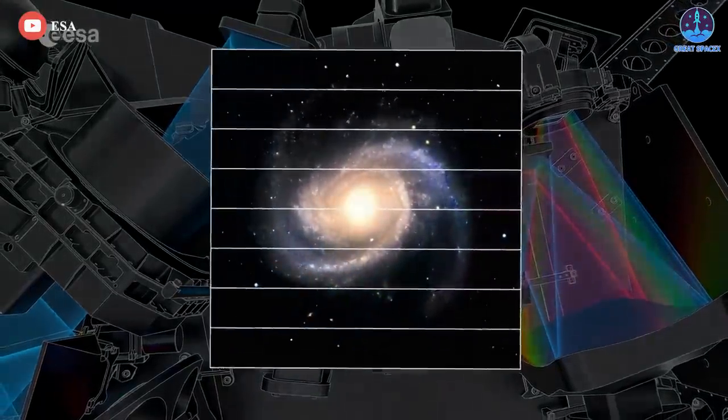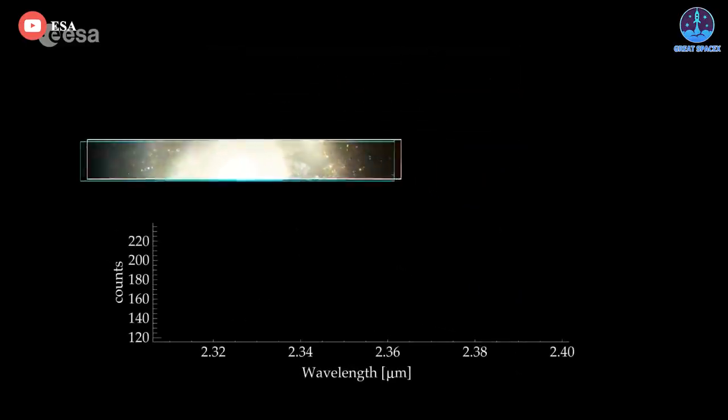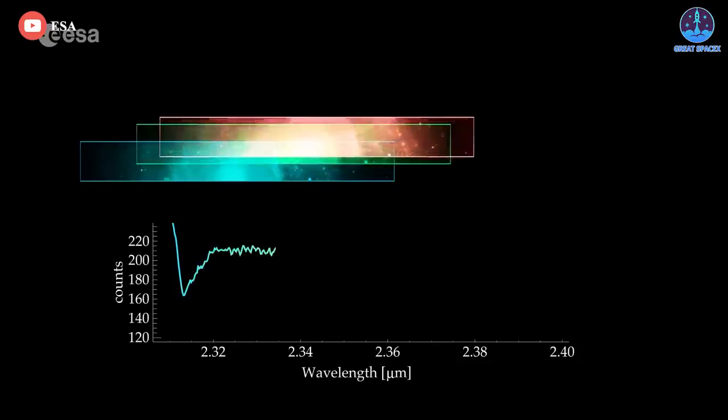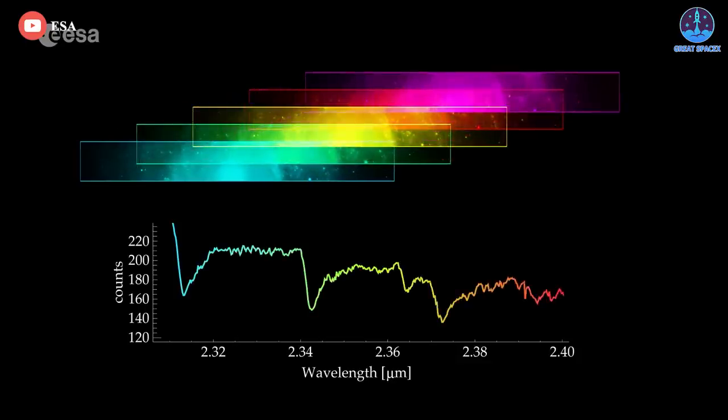The final mode verified for NearSpec was the Multi-Object Spectroscopy Mode, a key capability that allows Webb to capture spectra, or rainbows of infrared light, from hundreds of different cosmic targets at once.